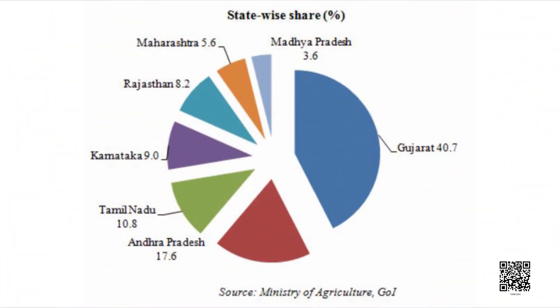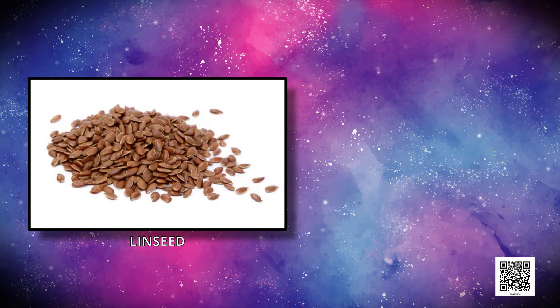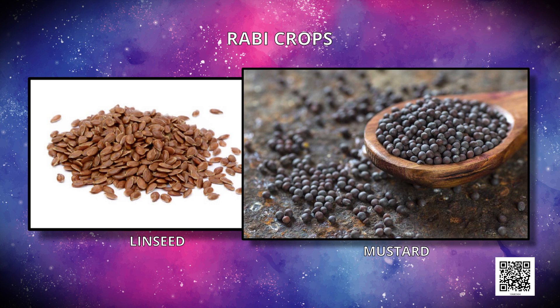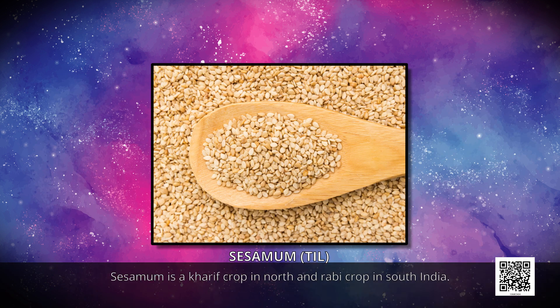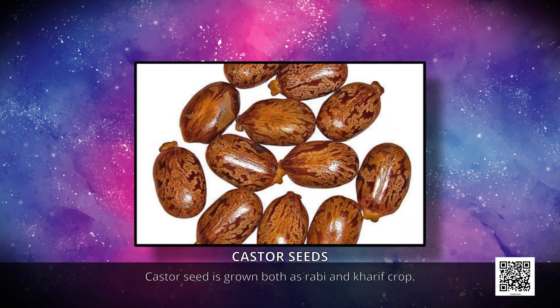Gujarat was the largest producer of groundnut followed by Andhra Pradesh and Tamil Nadu in 2011-12. Linseed and mustard are Rabi crops. Sesame is a Kharif crop in the north and a Rabi crop in the south. Castor seed is grown both as Rabi and Kharif crop.